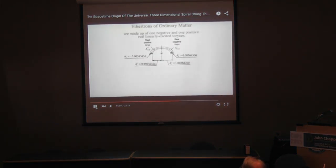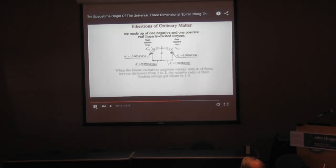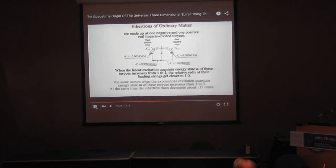Ethertrons of ordinary dynamic matter are made up of one negative and one positive real linearly excited Torex. When the linear excitation quantum energy state M of these Torexes increases from 1 to 2, the relative radii of their leading strings get closer to 1. The same occurs when M increases from 2 to 3. At the same time, the ethertron mass decreases about 137 times.